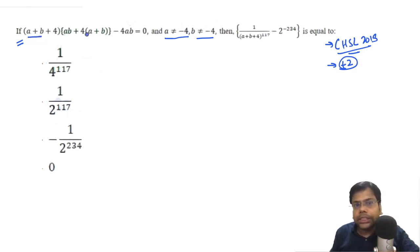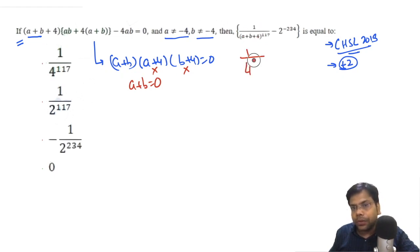Anyhow, we have a plus b. We just need to open the bracket. I know the identity of this one is nothing but a plus b, a plus 4 and b plus 4. I know this one is the identity. I will prove how this identity would come. Anyway, we know this one is not equal to 0. This one is not equal to 0. It means a plus b must be 0. Put a plus b must be 0. This one is nothing but a plus b, 0. 4 raised to power 117 minus this one is nothing but 2 raised to power 234. This one is nothing but 1 upon 2 raised to power 234 minus 1 upon 2 raised to power 234.